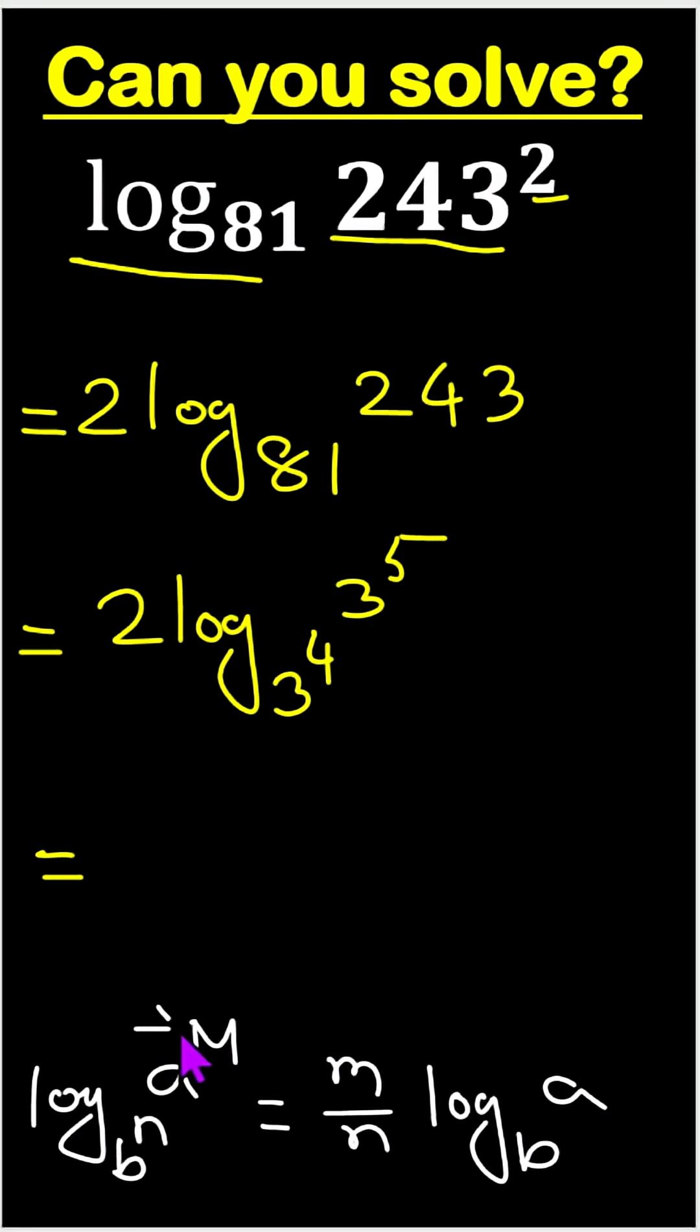So here, this m is - we can write this 2, this is m, right? And this is a, this is n, and this is B.